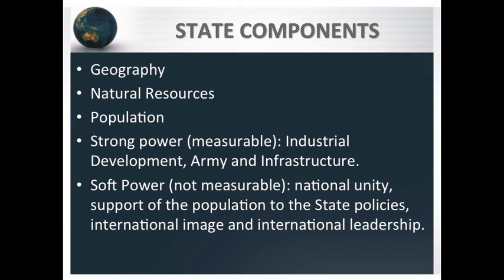The state has different components: geography, natural resources, population, and hard power and soft power. On one side, we have hard power, which is measurable — industrial development, army, and infrastructure. On the other side, we have soft power, which is not measurable and is qualitative. This includes national unity, support of the population to state policies, international image, and international leadership.